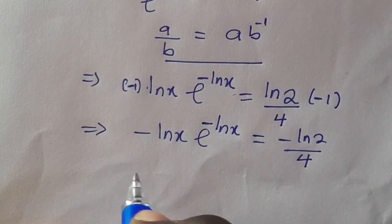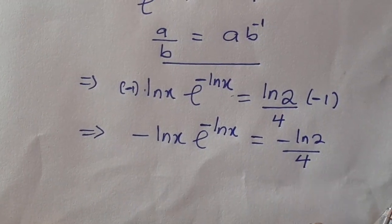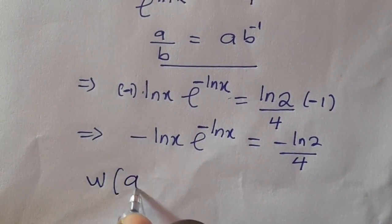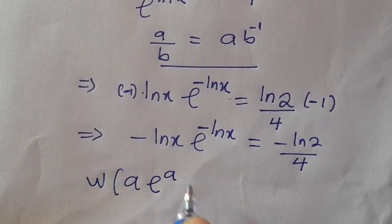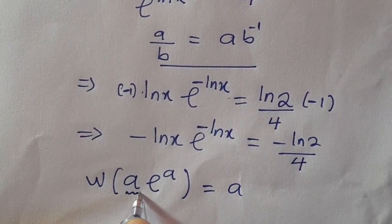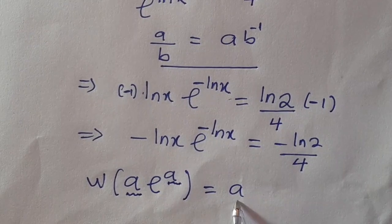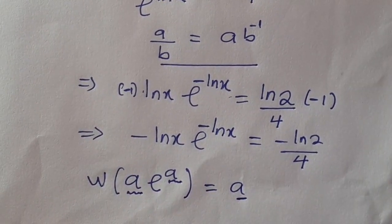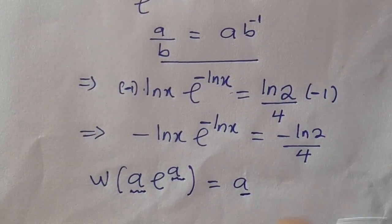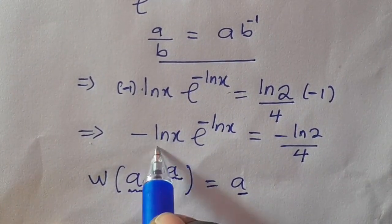We have to recall from Lambert's W function that says when you have W of A times e to power A, this will always give us A. That is, when you have the base equal to the same thing as the power, you are going to get back your A. For us to apply the Lambert W function here, we have to make sure the base and the power are the same.